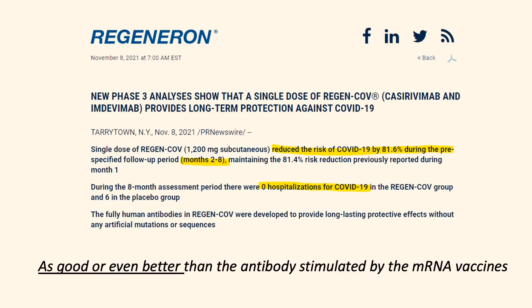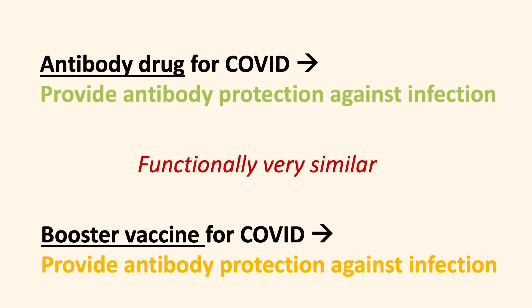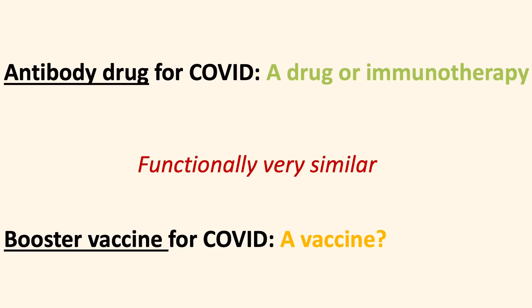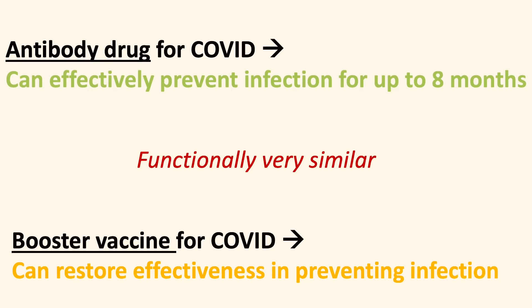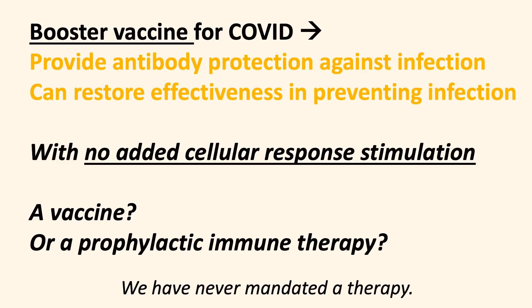Here is an interesting finding just released on November 8th. The antibody drug for COVID produced by Regeneron shows protection against COVID-19 for up to eight months. This is as good or even better than the antibodies stimulated by the mRNA vaccines. In fact, it appears that the antibody drug for COVID is doing a very similar job as the booster mRNA vaccine. So can we still call the booster vaccine a vaccine, or is it an immunotherapy?